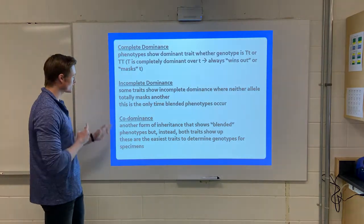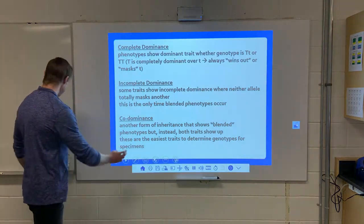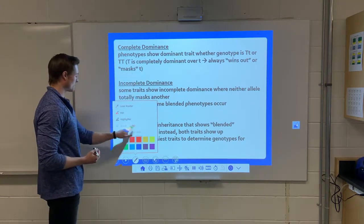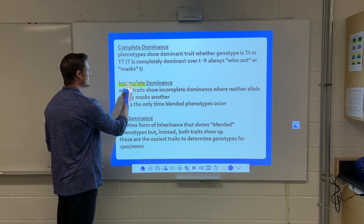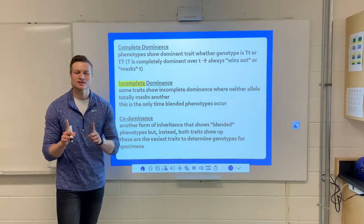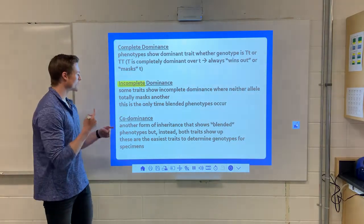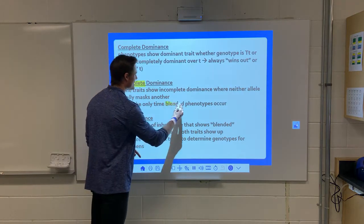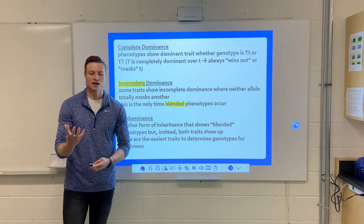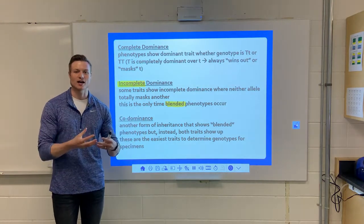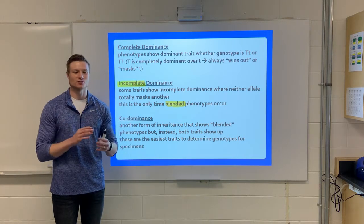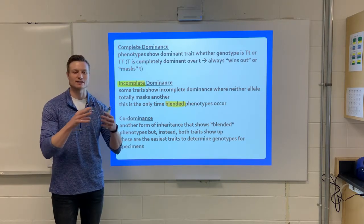Now let's get into incomplete and co-dominance. For incomplete dominance, there's a little bit of dominance but it's not full, which means we get a blended phenotype. An example of this would be a red flower crossed with a white flower — when we have a hybrid, a heterozygous individual, it would be a pink flower. So we get a mix of the two: red and white blended together to get pink.